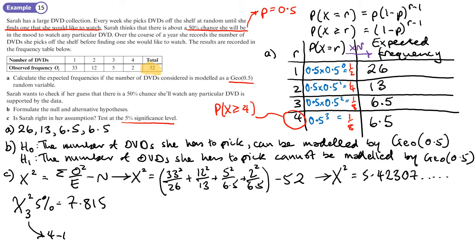Now how does my value compare? Well my value of 5.423 is less than that, which means that I accept H0.